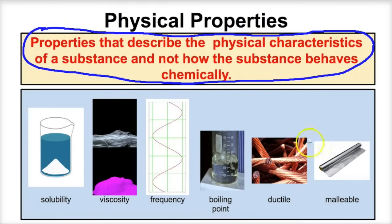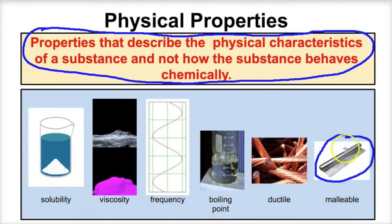For example, if we said that aluminum foil is malleable, what does that mean? What does the word malleable mean? Well, it means that the metal has the ability to be hammered into thin sheets — we can take aluminum and hammer it down into thin sheets. That's not telling us how this aluminum foil is going to react with something else; that's just telling us how it's going to change physical form. So malleability, or malleable, is a physical property of matter.